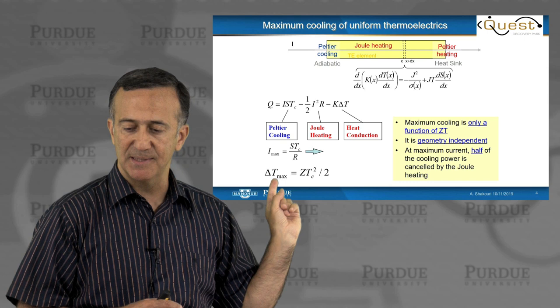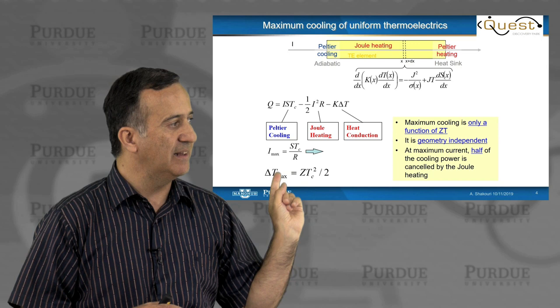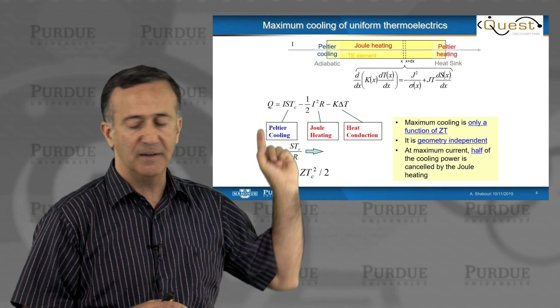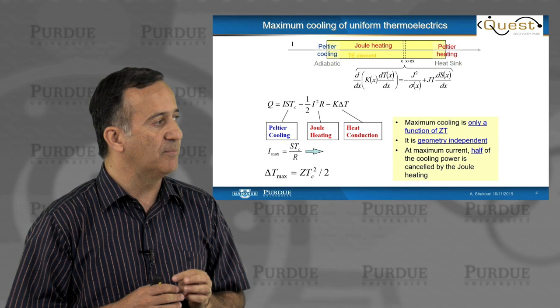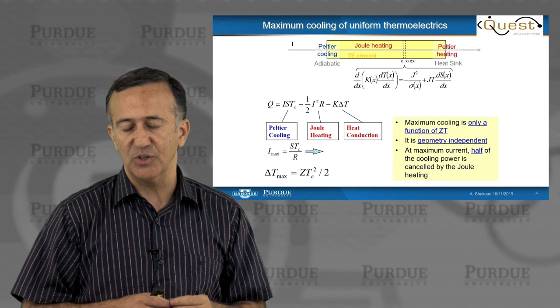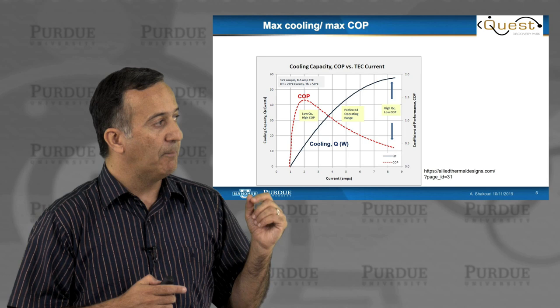So this simple result tells us by optimizing the material, we can increase the maximum cooling. The question is, the geometry doesn't impact delta T, but geometry does impact Q. So the Q term here is really directly affected by the thickness of the thermoelectric element, and that's something you can look at it by putting the dimensions. So in the real design, you need to consider the geometry if you are interested to optimize the cooling power.